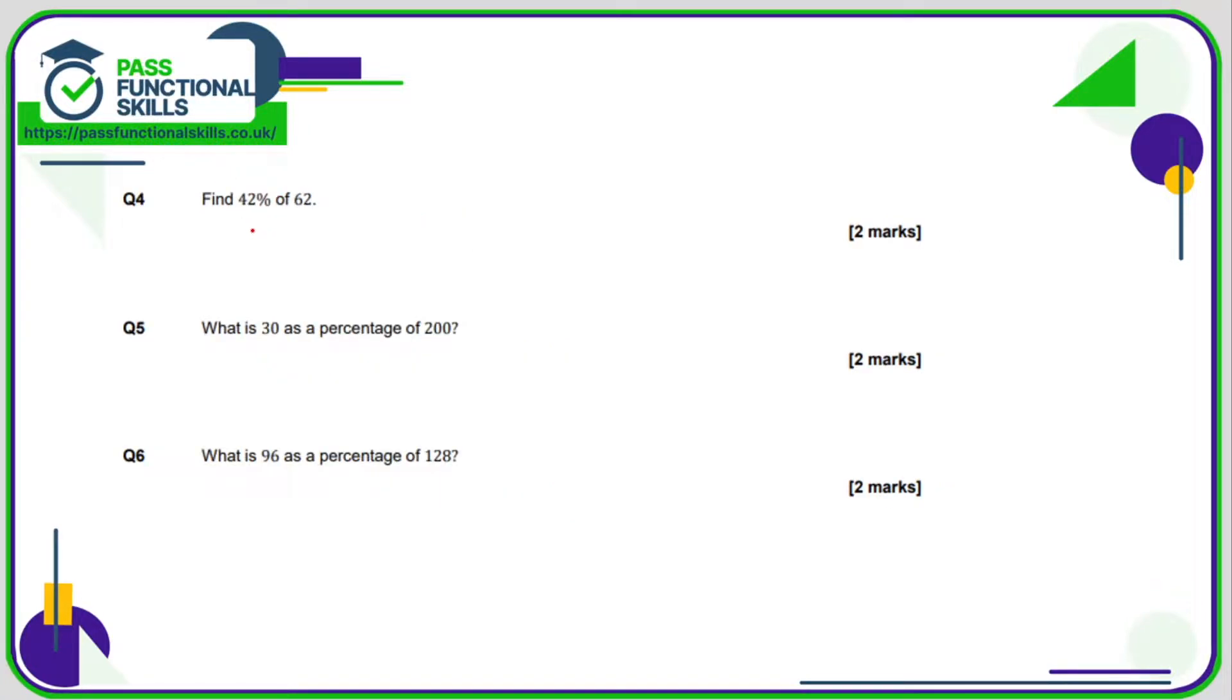42% of 62. The calculation is 0.42 multiplied by 62, which comes to a total of 26.04.